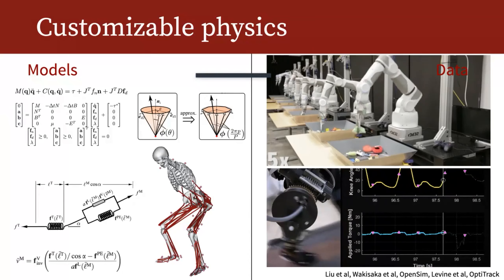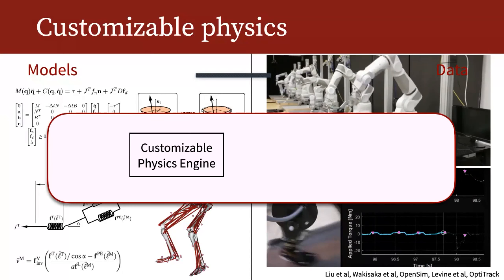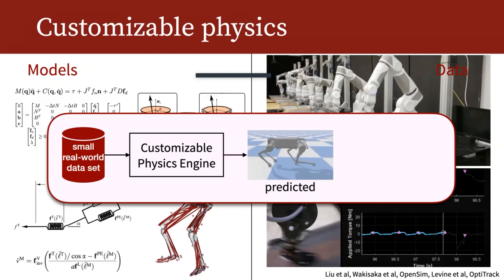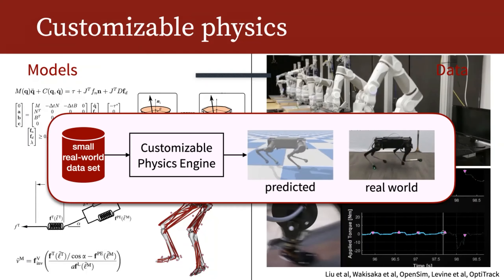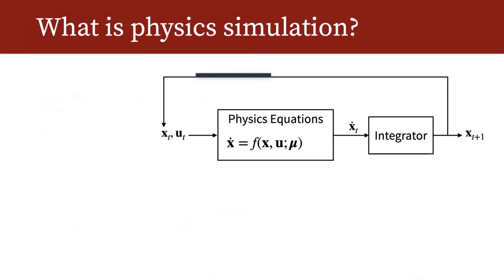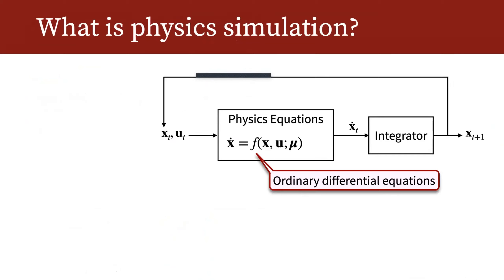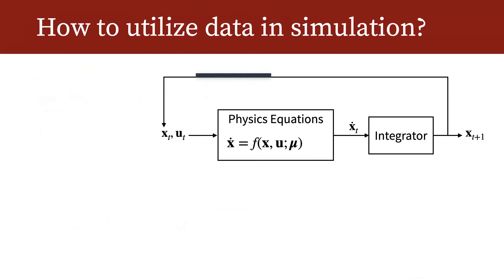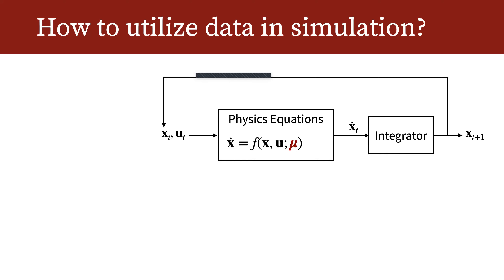So what is the principled methodology to integrate data with physics models? Ideally we'd have a customizable physics engine that takes a small amount of real-world data and uses it to train a policy that crosses the sim-to-real gap. At the level of simulation, we're dealing with differential equations — say, ordinary differential equations for rigid body simulation. An obvious place to inject data influence is through the parameter mu, which could represent geometry, friction coefficients, etc.